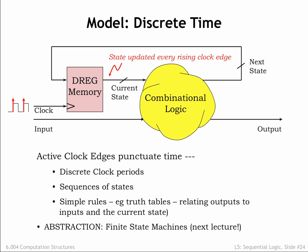A sequence of rising clock edges and inputs will produce a sequence of states, which leads to a sequence of outputs. In the next chapter, we'll introduce a new abstraction, finite state machines, that will make it easy to design sequential logic systems.